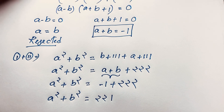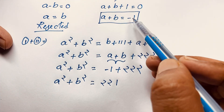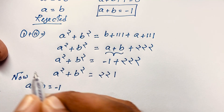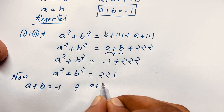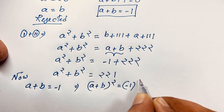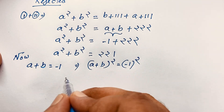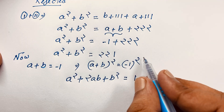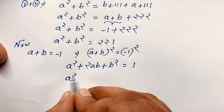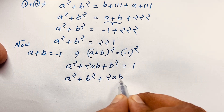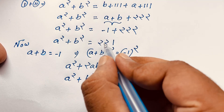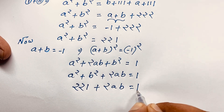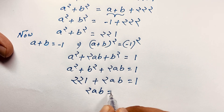Now recall that a plus b equals minus 1. I square both sides: (a + b)² equals (−1)², which gives a squared plus 2ab plus b squared equals 1. Since a squared plus b squared equals 221, I substitute: 221 plus 2ab equals 1.